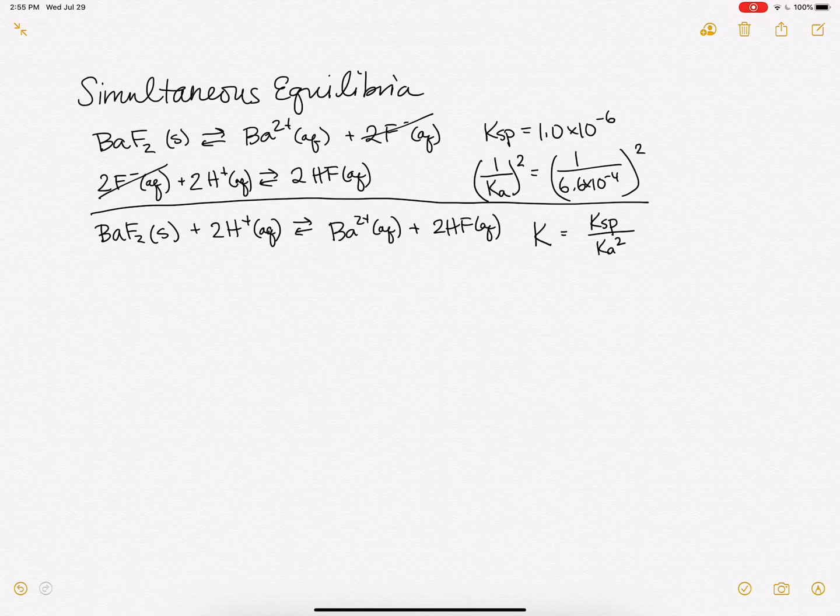And our new K will be our Ksp over the Ka squared. And if I calculate that out, I think we get 2.29. That's our new K value.